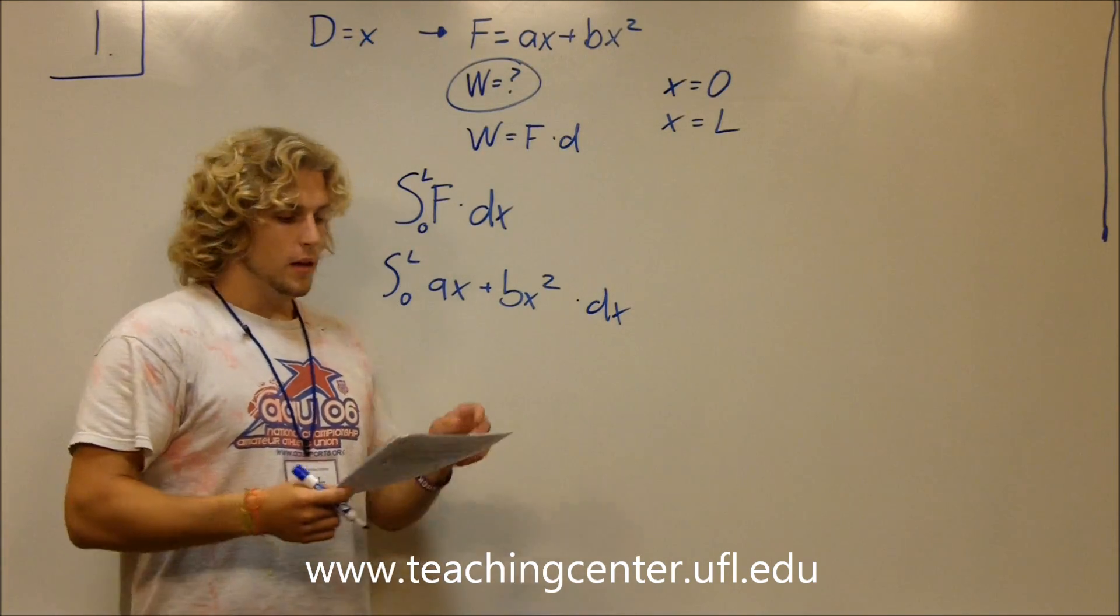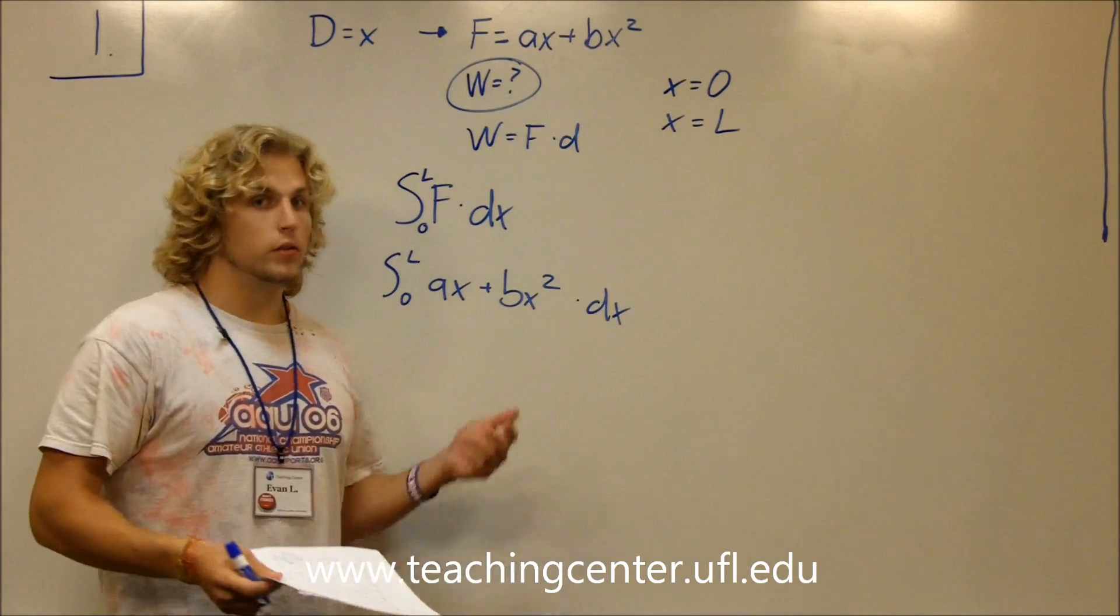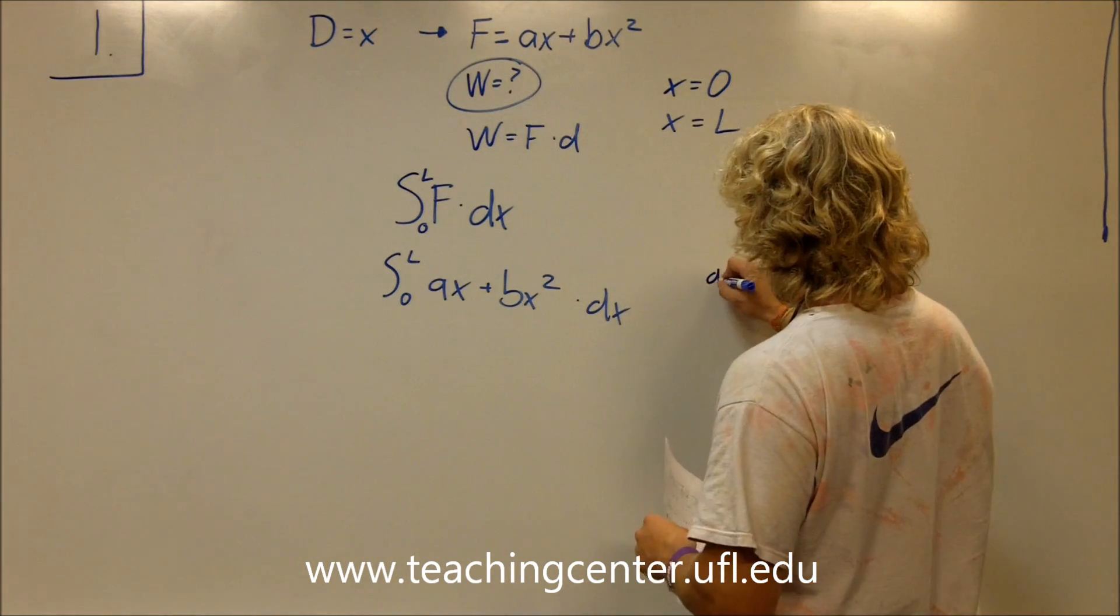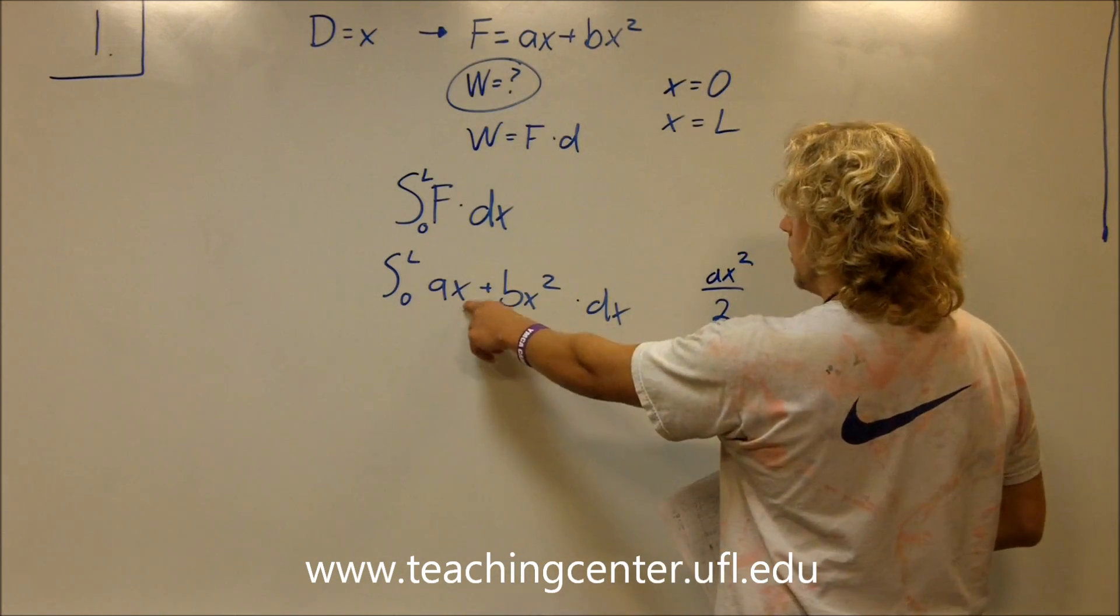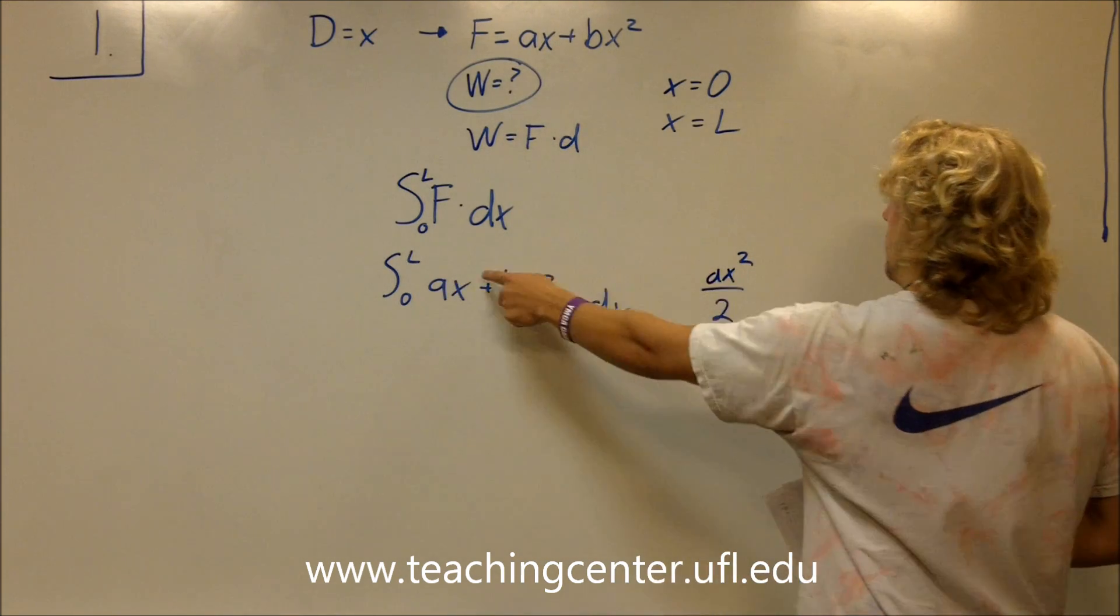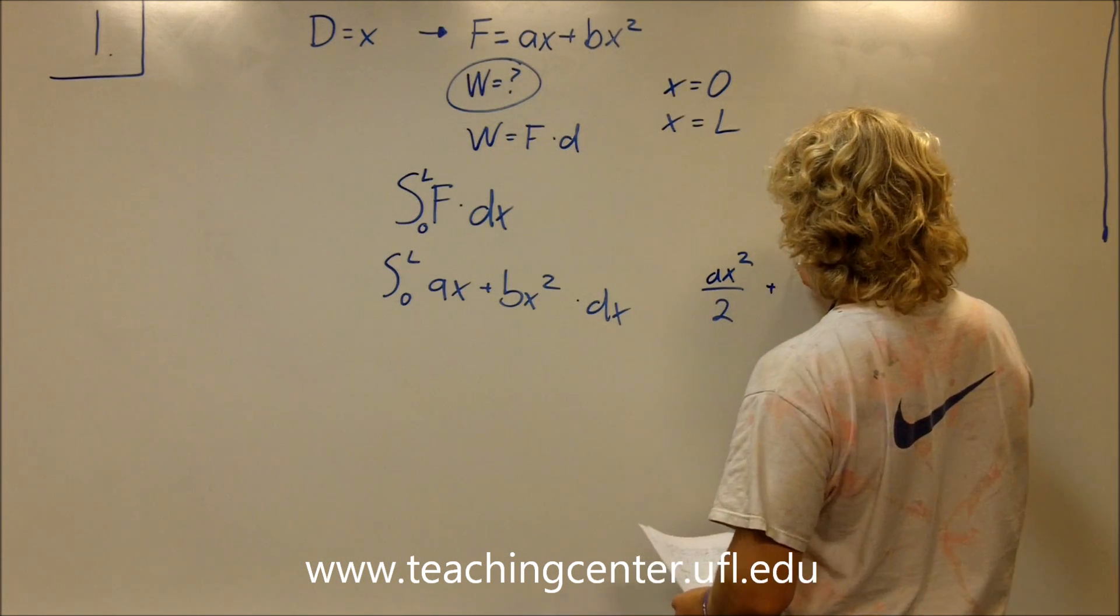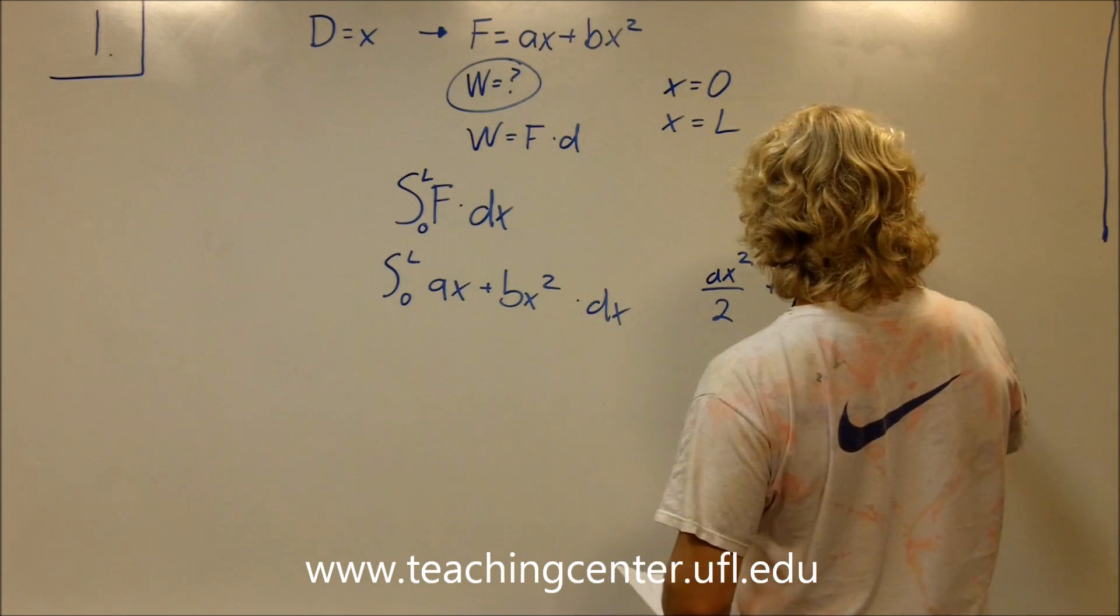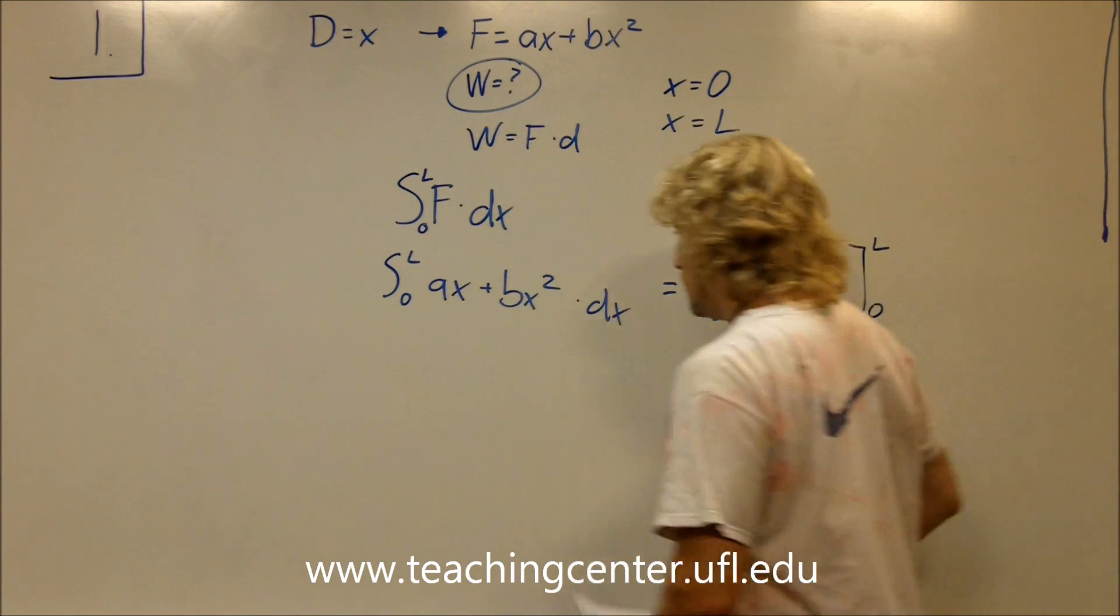So what we do now is we take the integral, and you're in physics with calculus so you should know how to do this. It ends up being you have ax squared over 2. This is a recap. You add 1 to the power and then you divide by that new power. So x was at 1, so now it's at 2, and then you divide by 2. Plus bx to the third, x to the third, all over 3, zero to L.